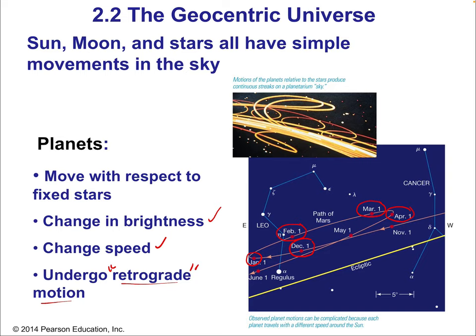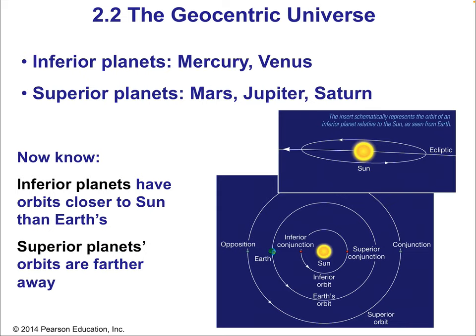We can group planets into inferior planets and superior planets. The inferior planets are Mercury and Venus, and the superior planets are Mars, Jupiter, and Saturn. They're known this way because inferior planets are closer to the sun than Earth, and superior planets are further away. This idea was incorporated even in the geocentric universe — it was thought that the inferior planets were closer to Earth than the sun, which orbited Earth, and then beyond were the superior planets.